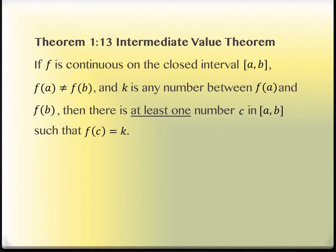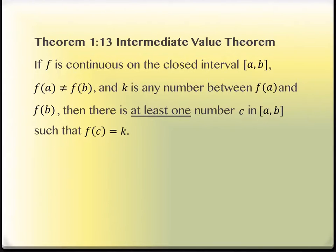Theorem 1.13, the Intermediate Value Theorem, says the following: if F is continuous on the closed interval A to B, and F of A and F of B are not the same, and K is any number between F of A and F of B, then there is at least one number C in the interval AB where F of C equals K.